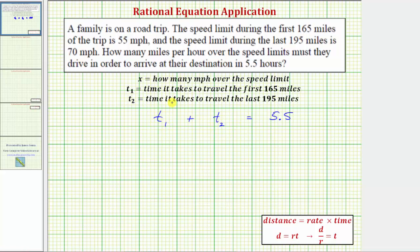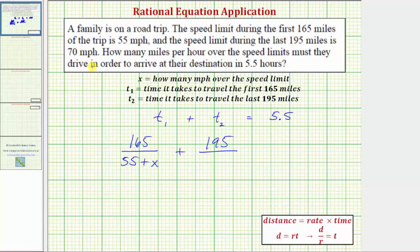T-sub-one is equal to the distance of 165 miles divided by the rate traveled. The rate is not just 55 miles per hour — it'll be 55 miles per hour plus the number of miles per hour over the speed limit. So we divide by the quantity 55 plus x. Similarly, t-sub-two is 195 divided by the rate, which is 70 plus x. This sum must equal 5.5.